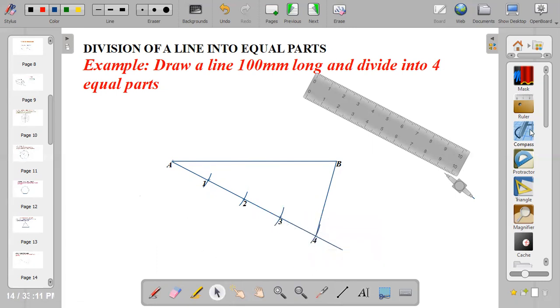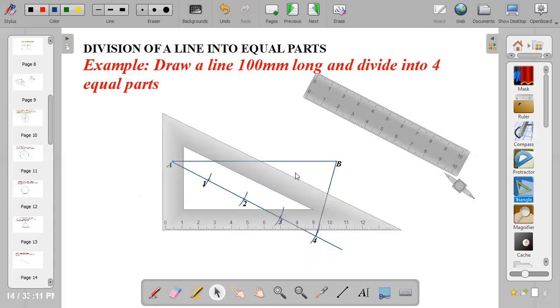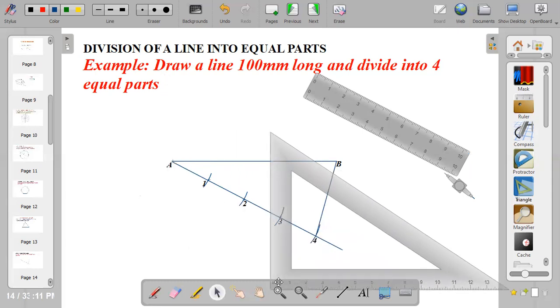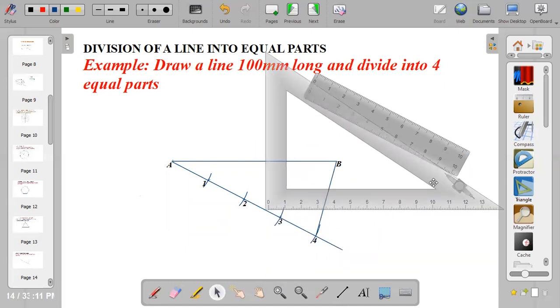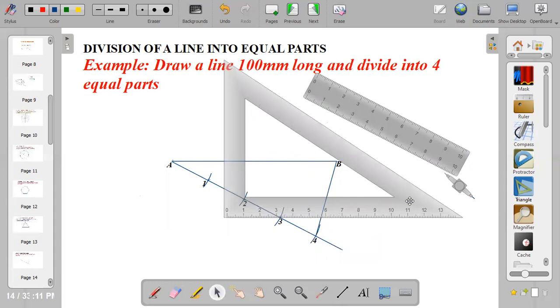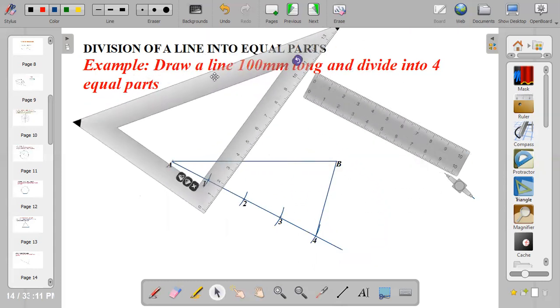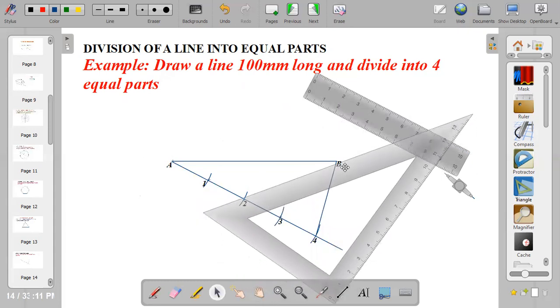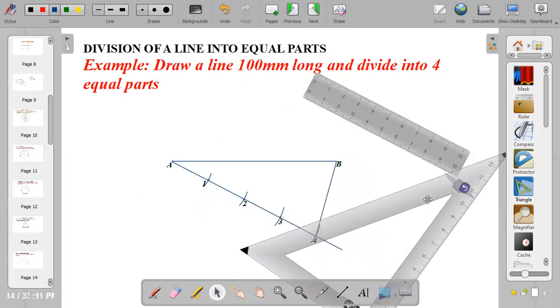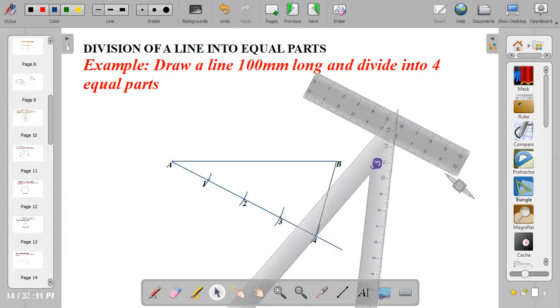So you bring out your set square. You place the inclined side on line 4B. Place the inclined line this way so that it touches line 4B.